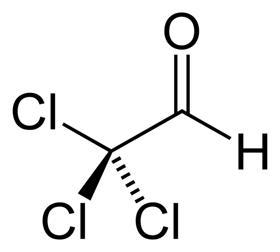Chloral is produced commercially by the chlorination of acetaldehyde in the presence of hydrochloric acid, producing chloral hydrate. Ethanol can also be used as a feedstock. This reaction is catalyzed by antimony trichloride. The reaction is: H3-CCHO plus 3Cl2 plus H2O gives Cl3-CCHO2 plus 3HCl. The chloral hydrate is distilled from the reaction mixture, then dehydrated with concentrated sulfuric acid, after which the heavier acid layer containing the water is drawn off. The resulting product is purified by fractional distillation.